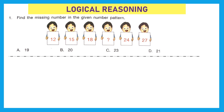The first section is logical reasoning. Question 1: find the missing number in the given number pattern. Let's first find the pattern. The first number is 12 and the next one is 15, so there is a jump of 3. From 12 we go to 13, 14, and then reach 15. So 12 plus 3 equals 15.